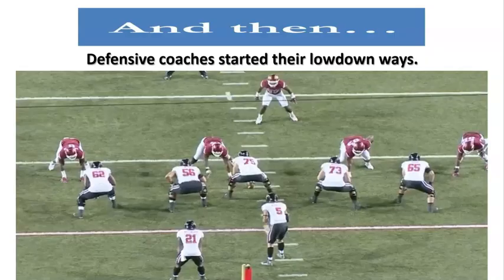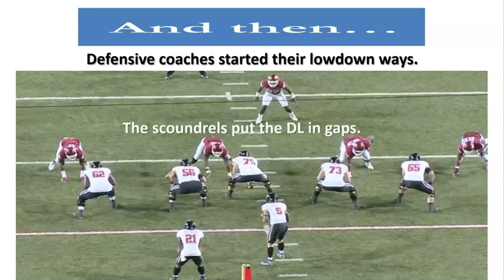Then these defensive coaches started their low-down ways. They started playing people on shoulders and putting them in gaps. This changes everything for the offense, because now you can't say 'block the man on your head' — which was the extent of O-line blocking rules. So coaches had to come up with blocking rules. That's where blocking rules came from — linked directly to defensive line techniques and the numbering system. Who would have thought?